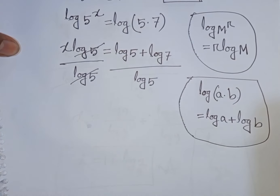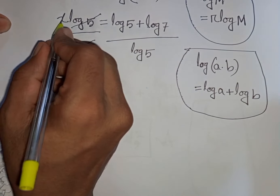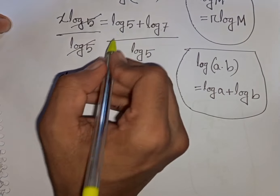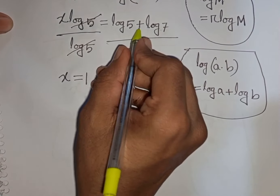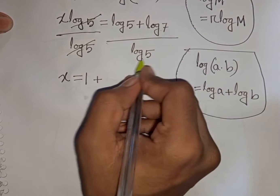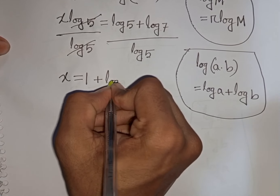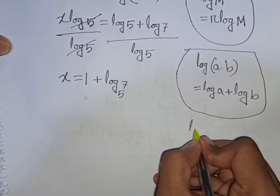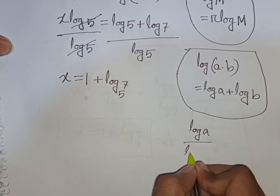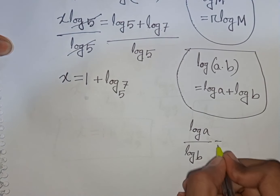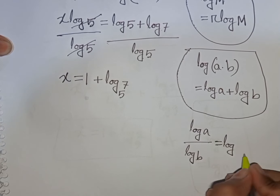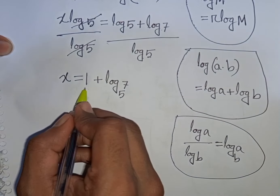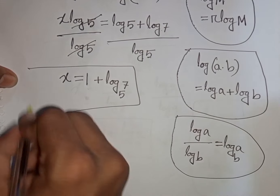The log 5 terms cancel on the left, so x equals log 5 over log 5, which is 1, plus log 7 over log 5. According to the change of base rule — log a divided by log b equals log a base b — this becomes 1 plus log 7 base 5. This is the final answer.